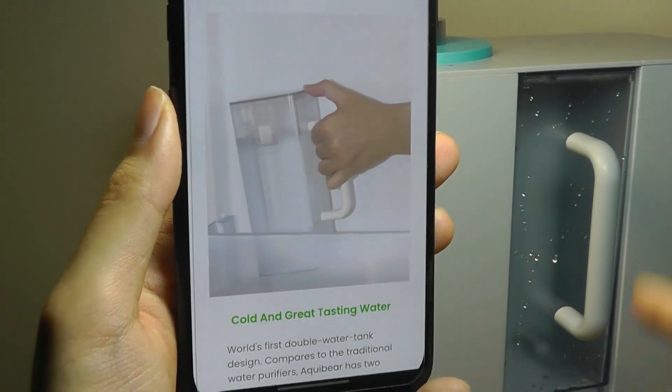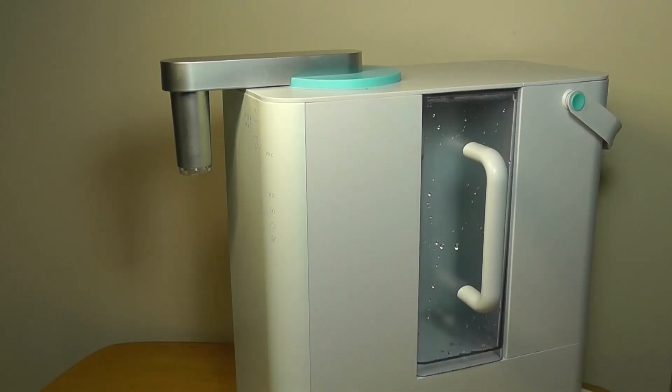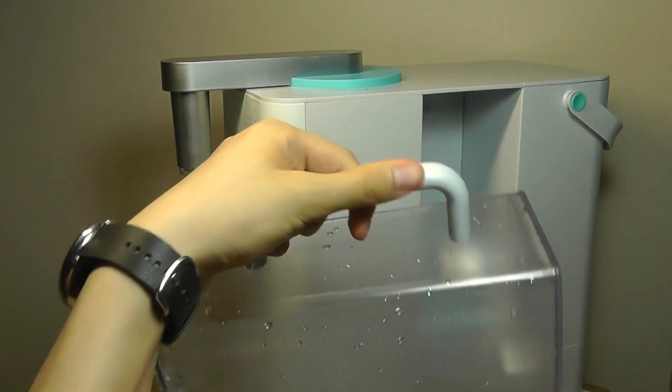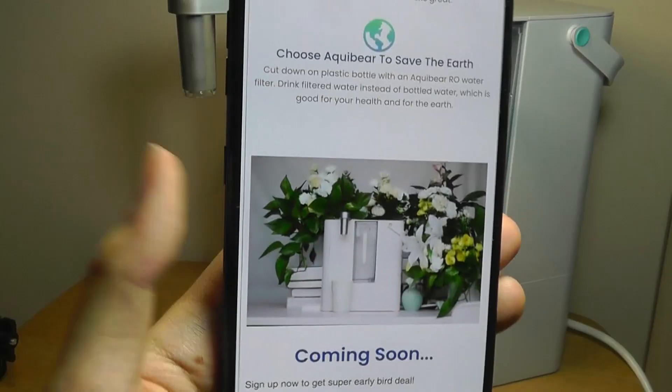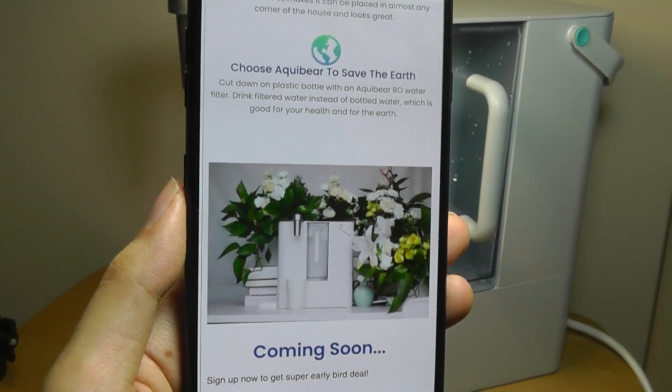It also has a detachable little container that's built in. As it is purifying the water, it's going to store the clean water inside of this container, which can actually be removed from the unit. You can just pour it or you can put it into a fridge if you want to further keep it cool. And of course, saving the earth because you don't have to use as many plastic water bottles.